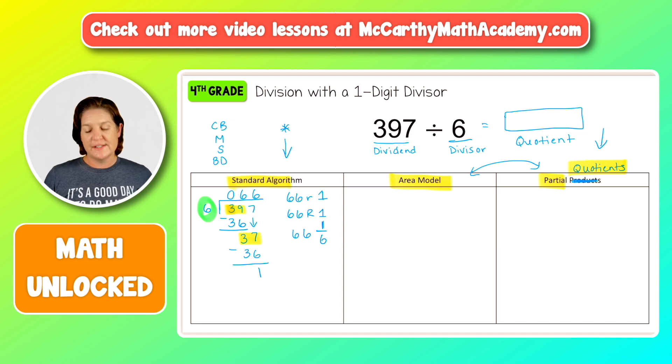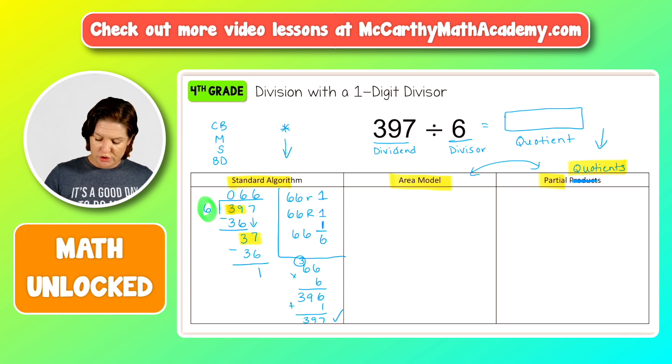You could also write this as a decimal, but we are not there yet with fourth grade. So we'll just keep it like this. And that would be the answer. And you could check this using multiplication by saying, okay, 66, which I always encourage you to do because students can make a lot of mistakes in division. So it's good to do this. So if I were to check this out, that would be 396 plus our remainder of one is 397. That works out. This is just checking though. Okay. But our answer is up here, our quotient.